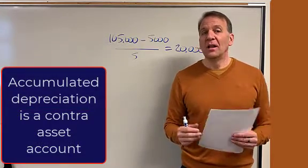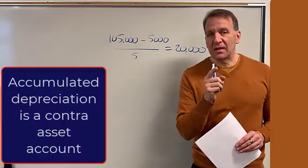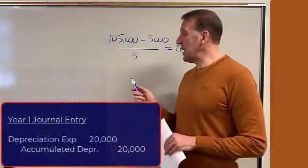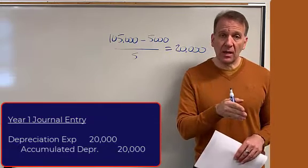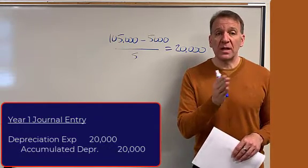I'll come back to that in just a second. Our depreciation expense in the first year, our journal entry is debit depreciation expense, credit accumulated depreciation $20,000.